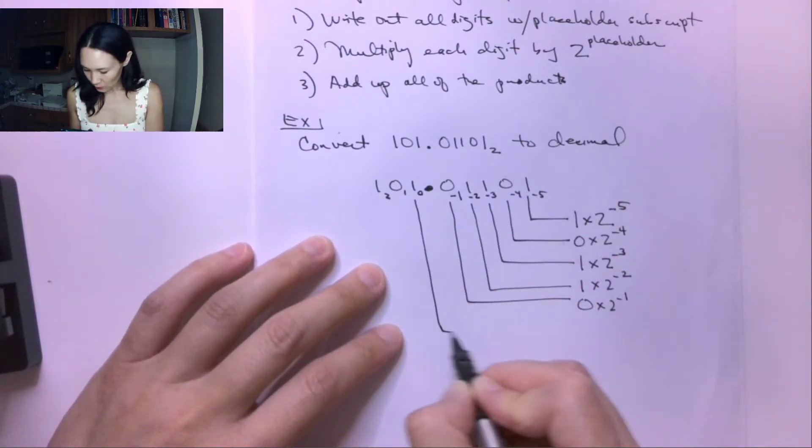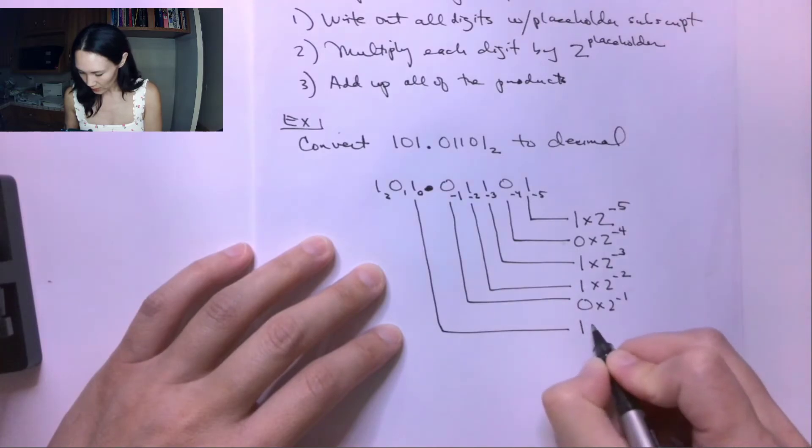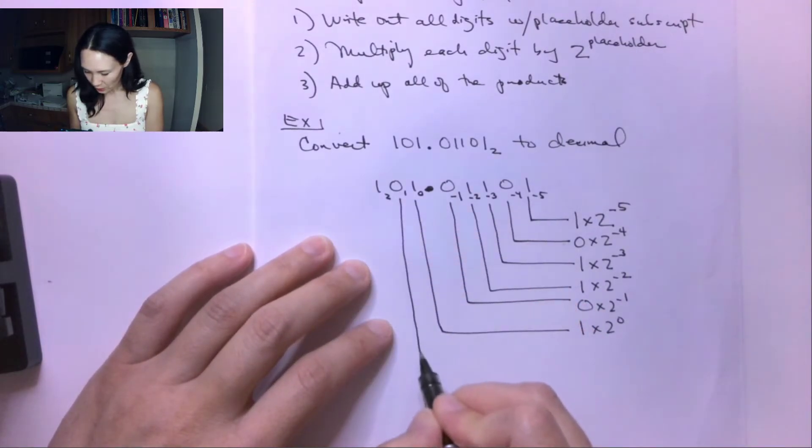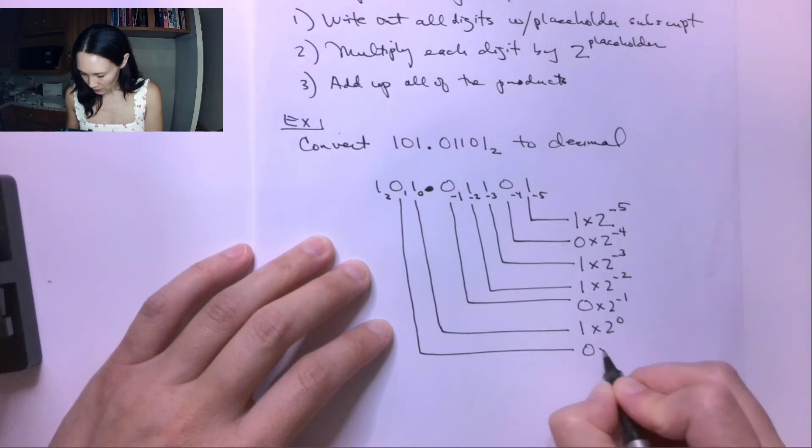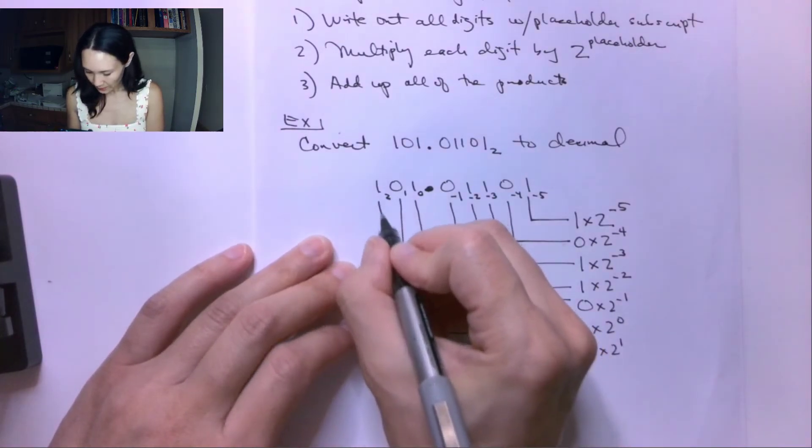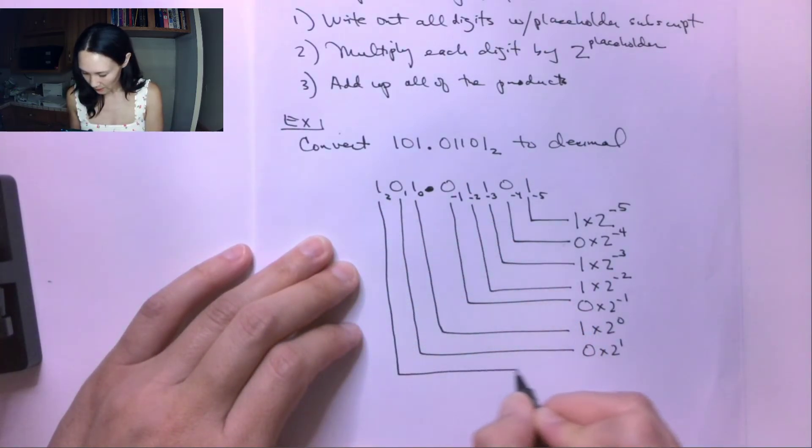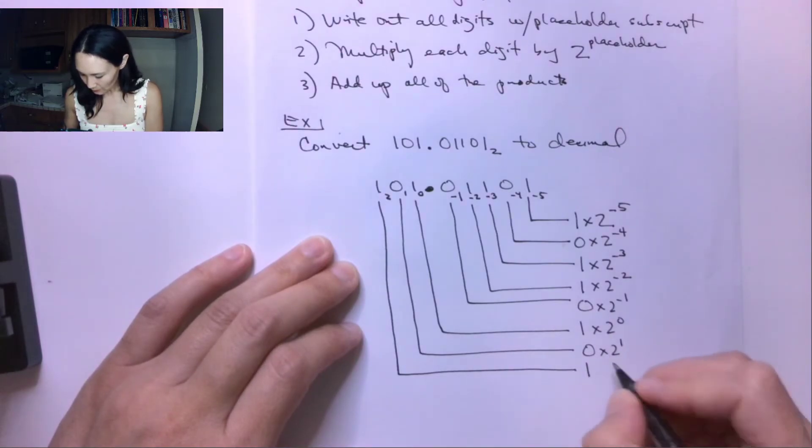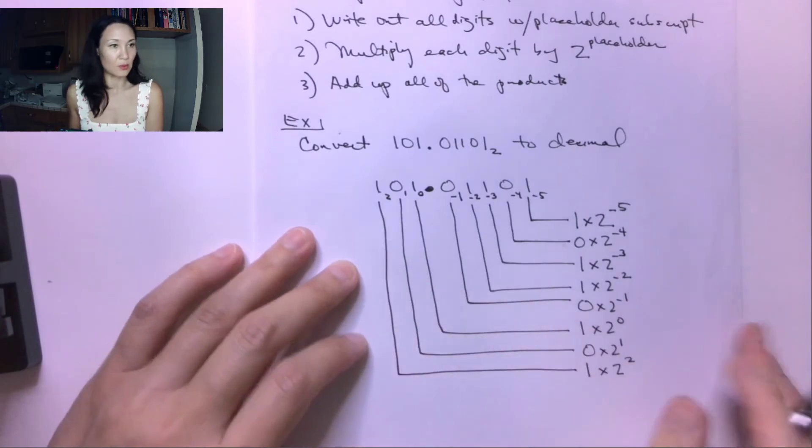So the next digit is 1 times 2 to the 0. The next digit is 0, 0 times 2 to the 1. And then finally, the most significant bit of our example is a digit of 1, so we multiply that by 2 to the 2, since 2 is the subscript on that 1.